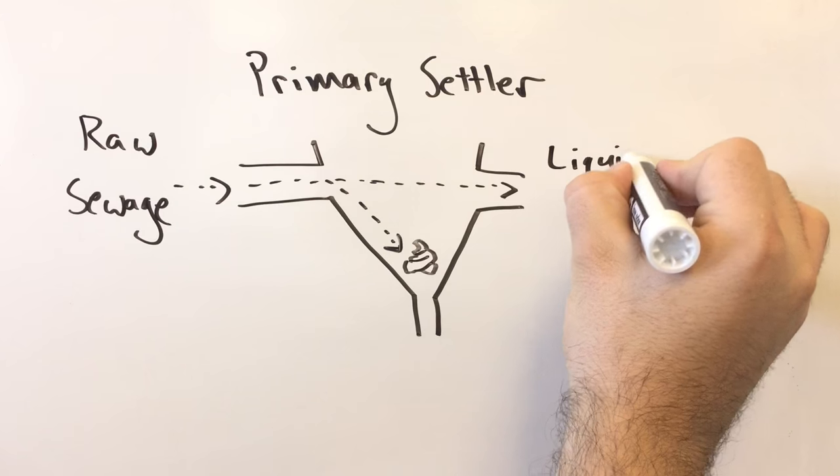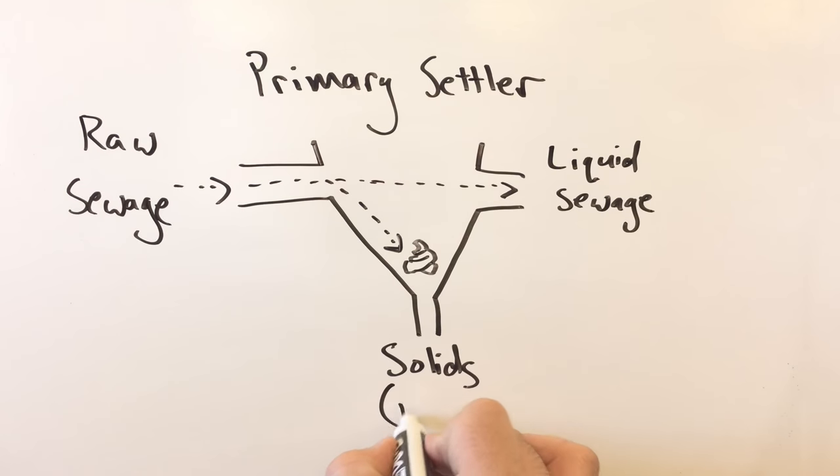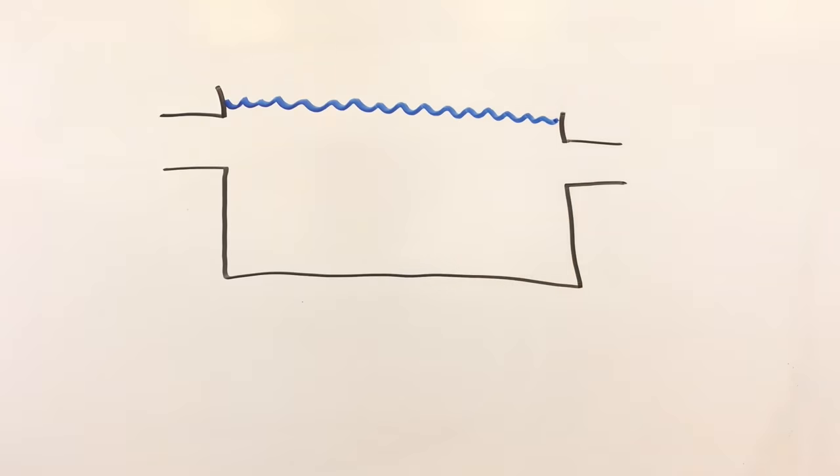To do this, the sewage is collected in a large tank. This allows most of the solid components to sink to the bottom while the liquid flows out the top. Just this step alone removes one-third of the BOD.